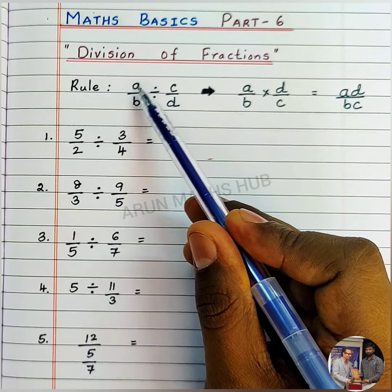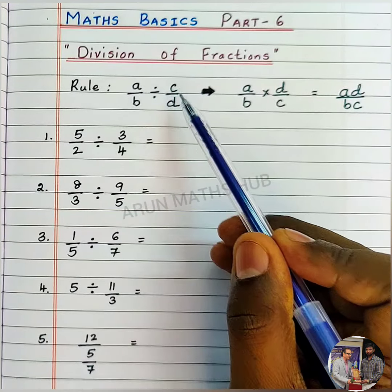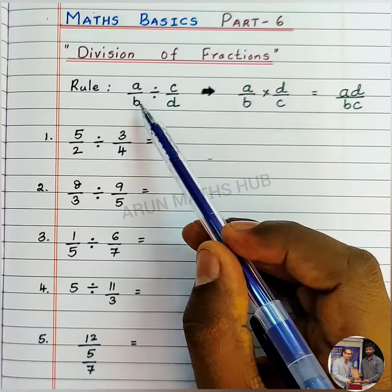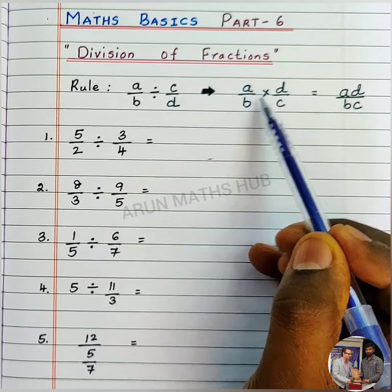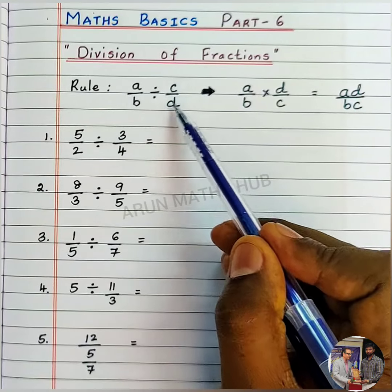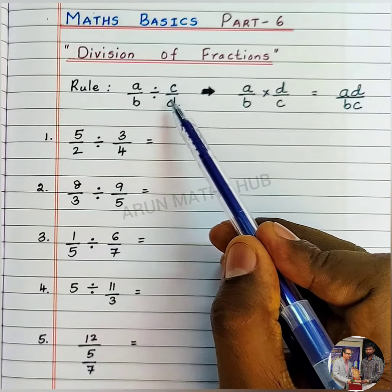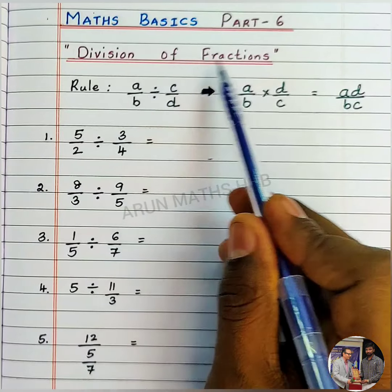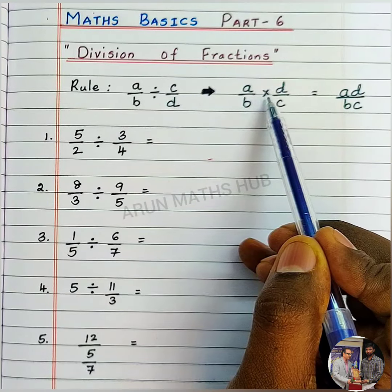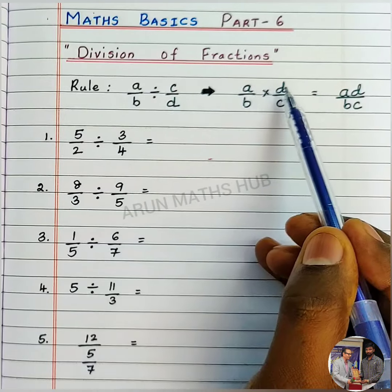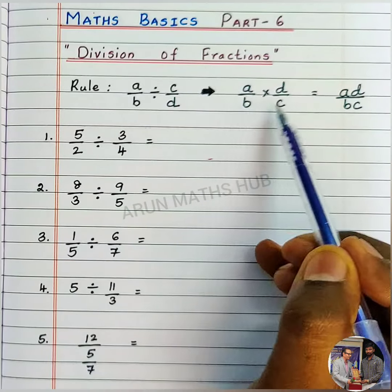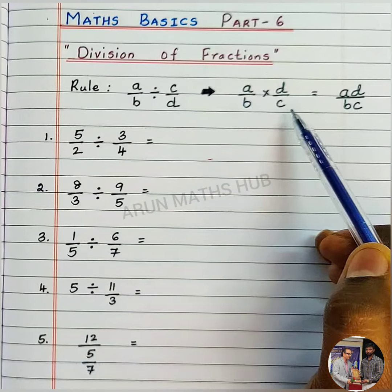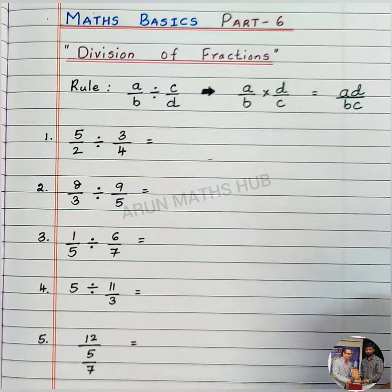If you consider a fraction a/b divided by c/d, then it can be written as a/b into d/c. Just reciprocal the denominator fraction - that is, a/b will be as it is, the division symbol will be changed into multiplication symbol, and c/d becomes d/c. Now it is just multiplication of fractions: a into d is ad, b into c is bc. This we have already learned in the previous video.